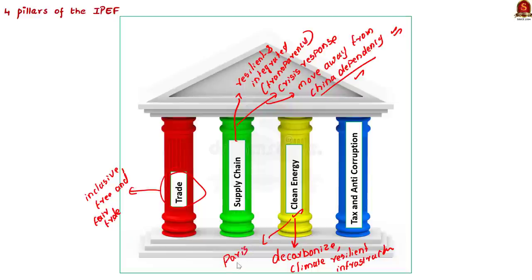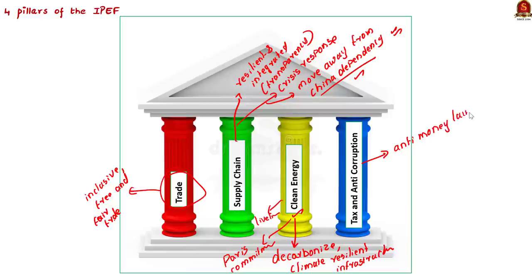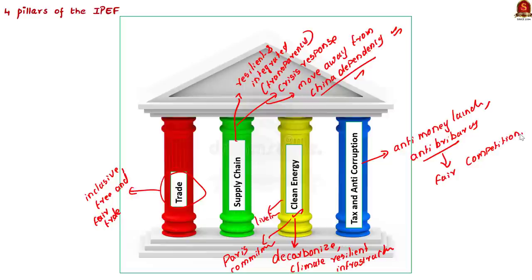This will also help provide sustainable livelihoods to people and workers. The fourth pillar is the tax and anti-corruption pillar. The IPEF plans to create an anti-money laundering and anti-bribery regime to curb tax evasion and corruption in the Indo-Pacific region, ensuring fair and transparent competition and supporting the sustainable development of IPEF member countries.